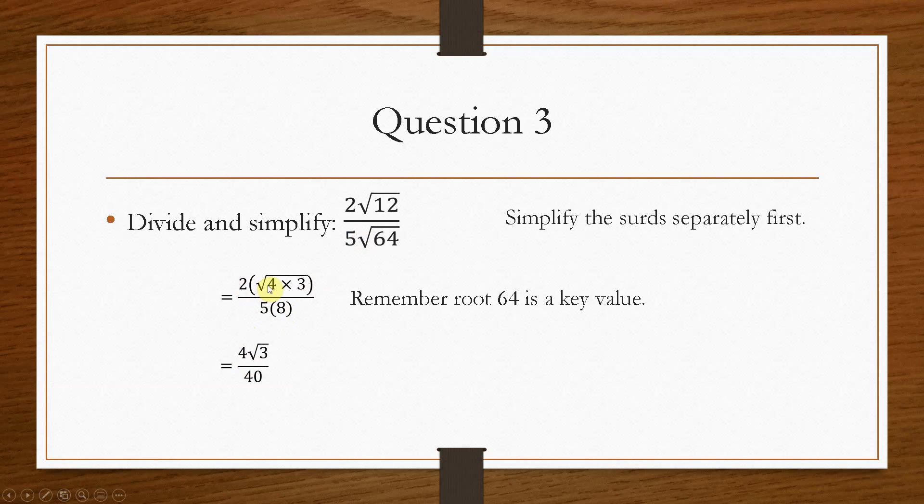Which will give you 2√3 times by 2, is 4√3, divided by 40. And now the fraction can be simplified, and your final answer becomes √3 over 10.